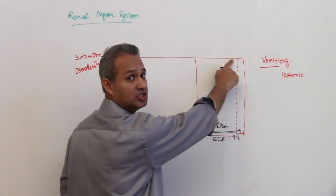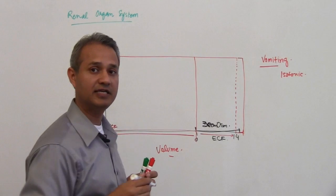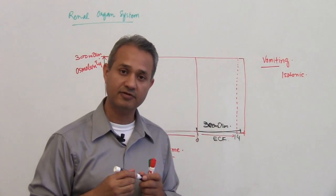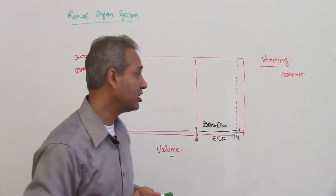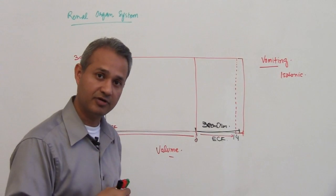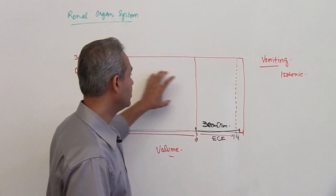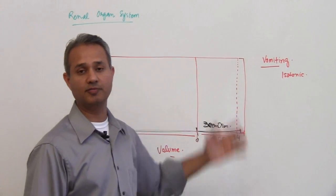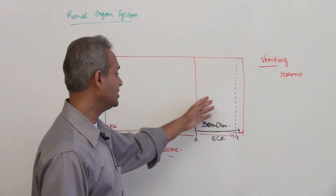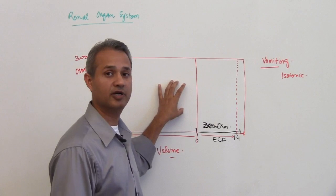So osmolarity did not change, the fluid volume changed. Will anything happen to the ICF? No. Why not? Because the osmolarity is still the same. Osmolarity is the driver, osmolarity change is the driver which will move the fluid from one compartment to the other compartment. So no change in the concentration of the fluid here, so no net movement.